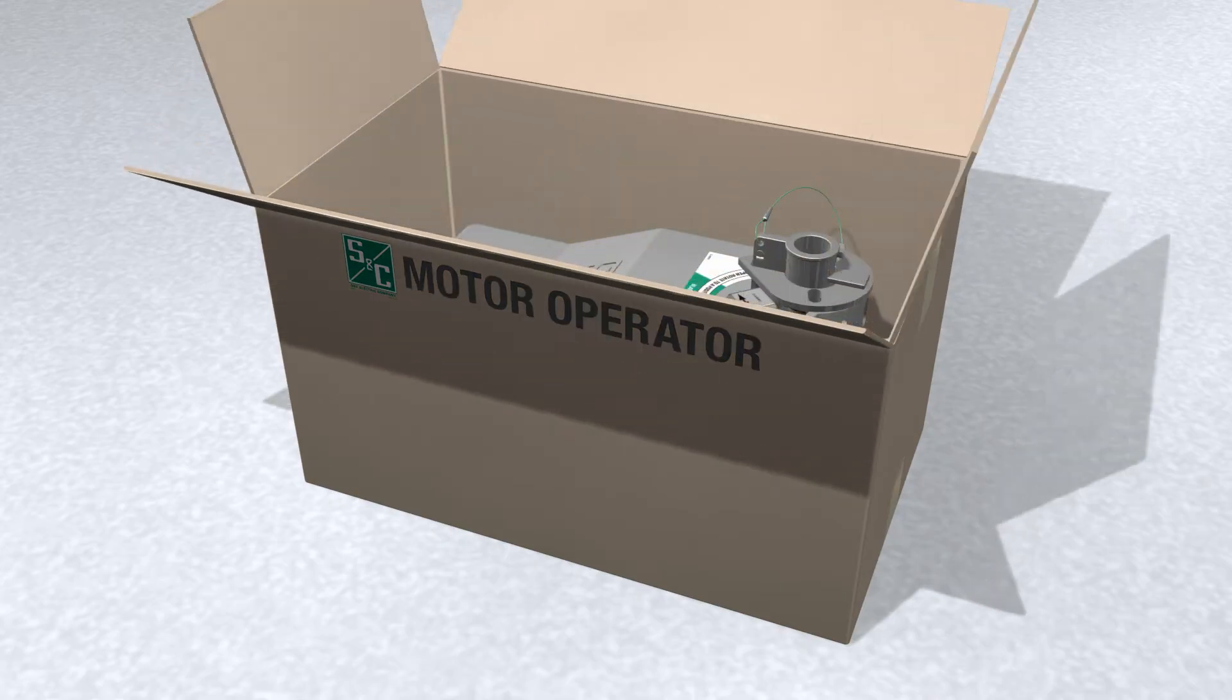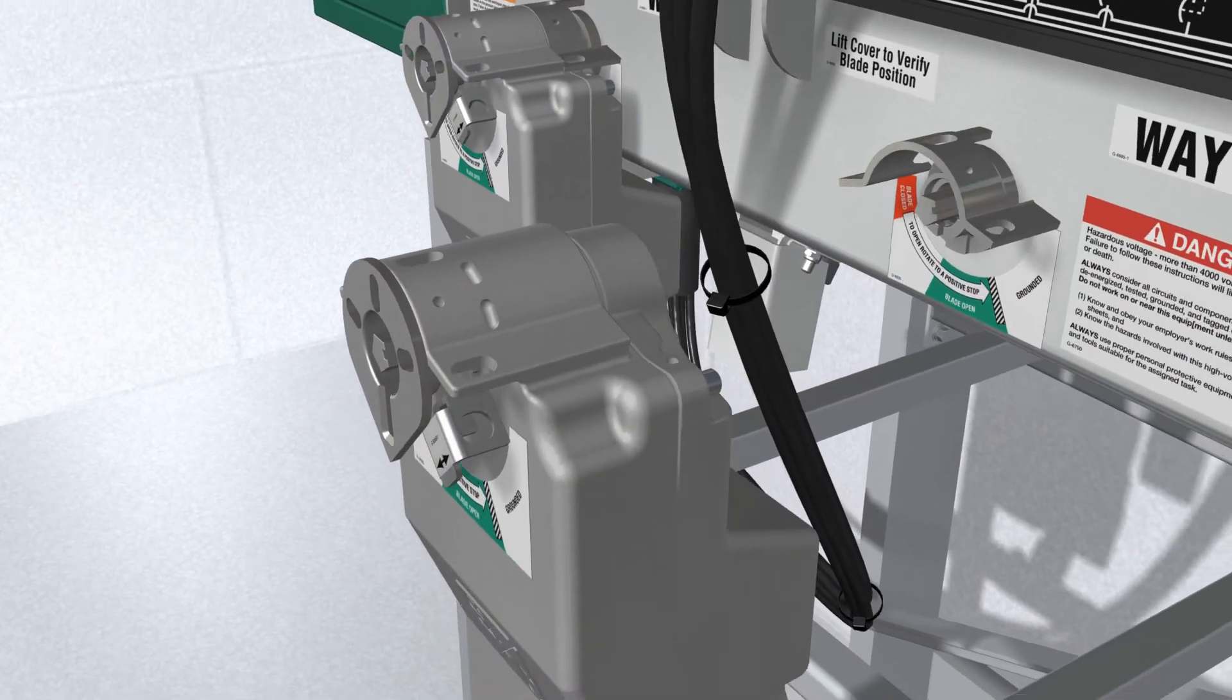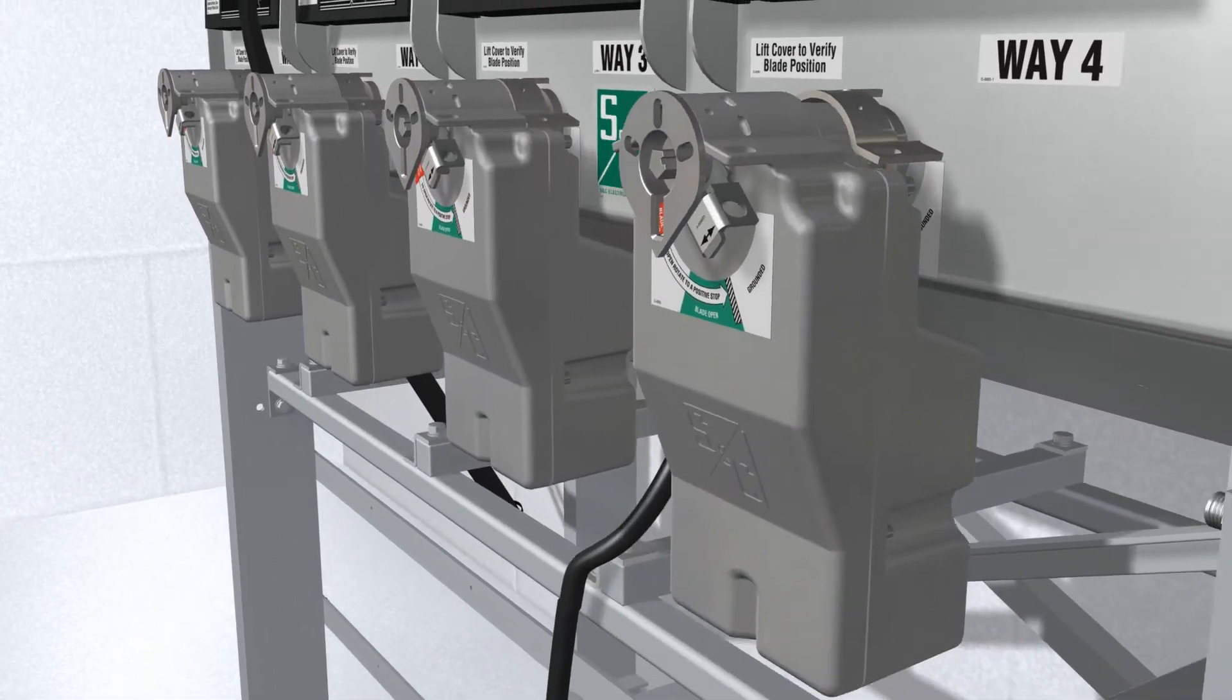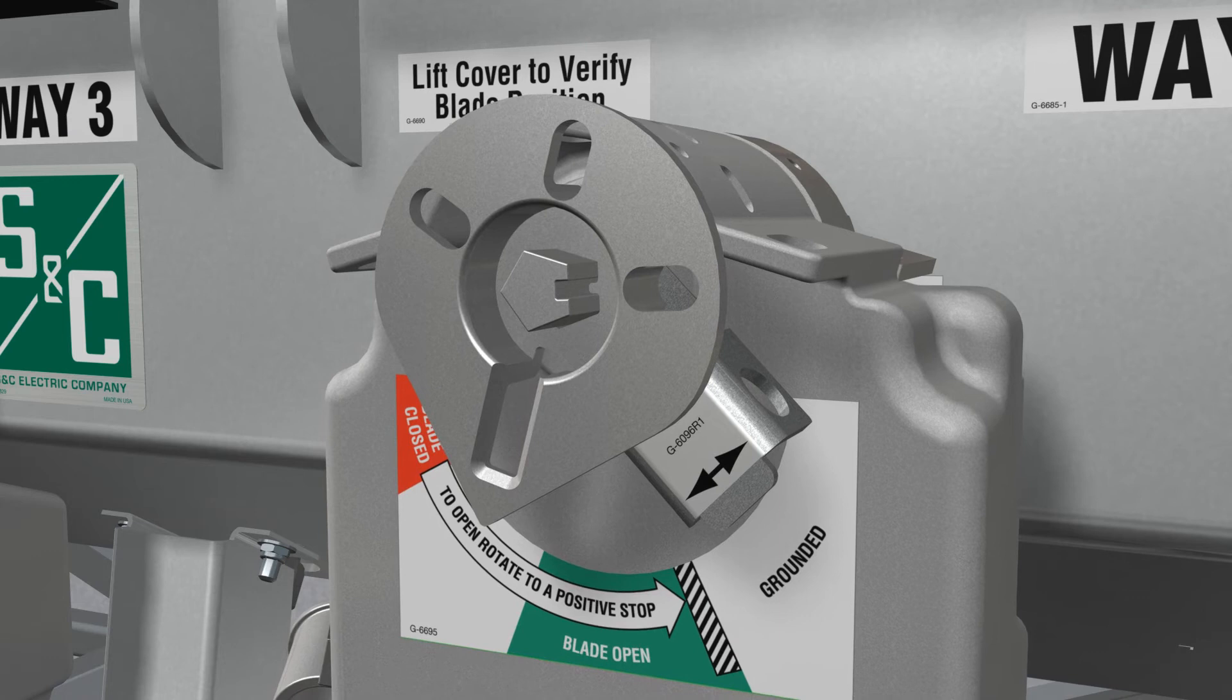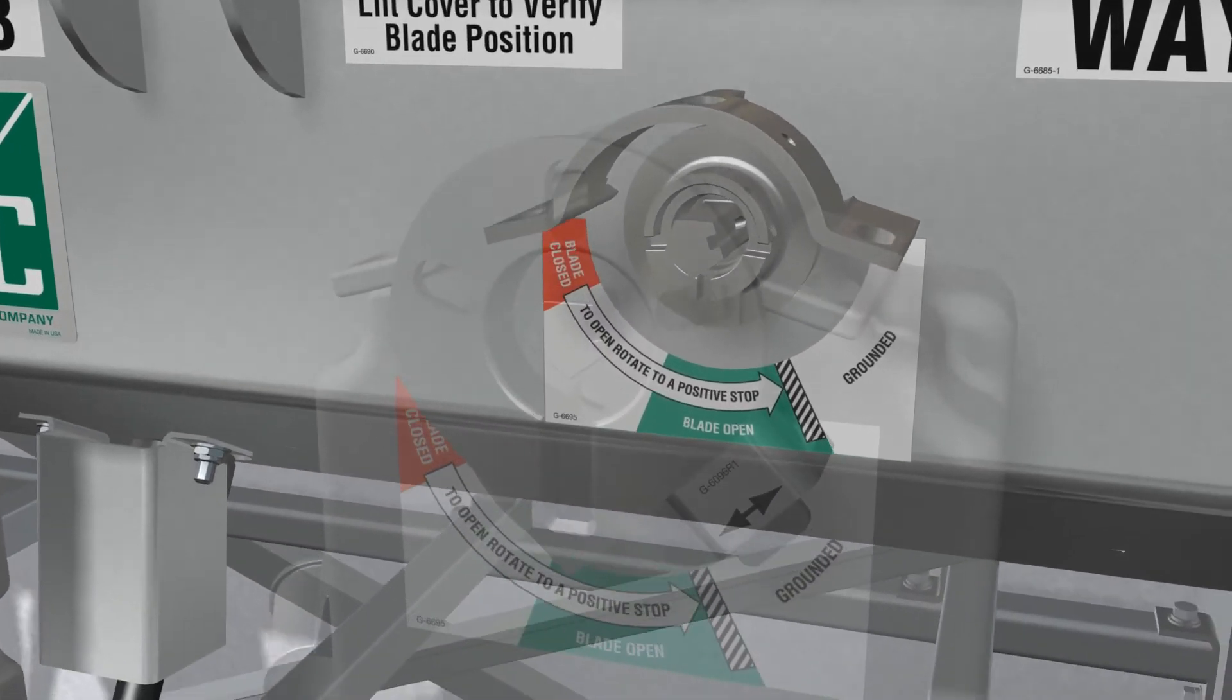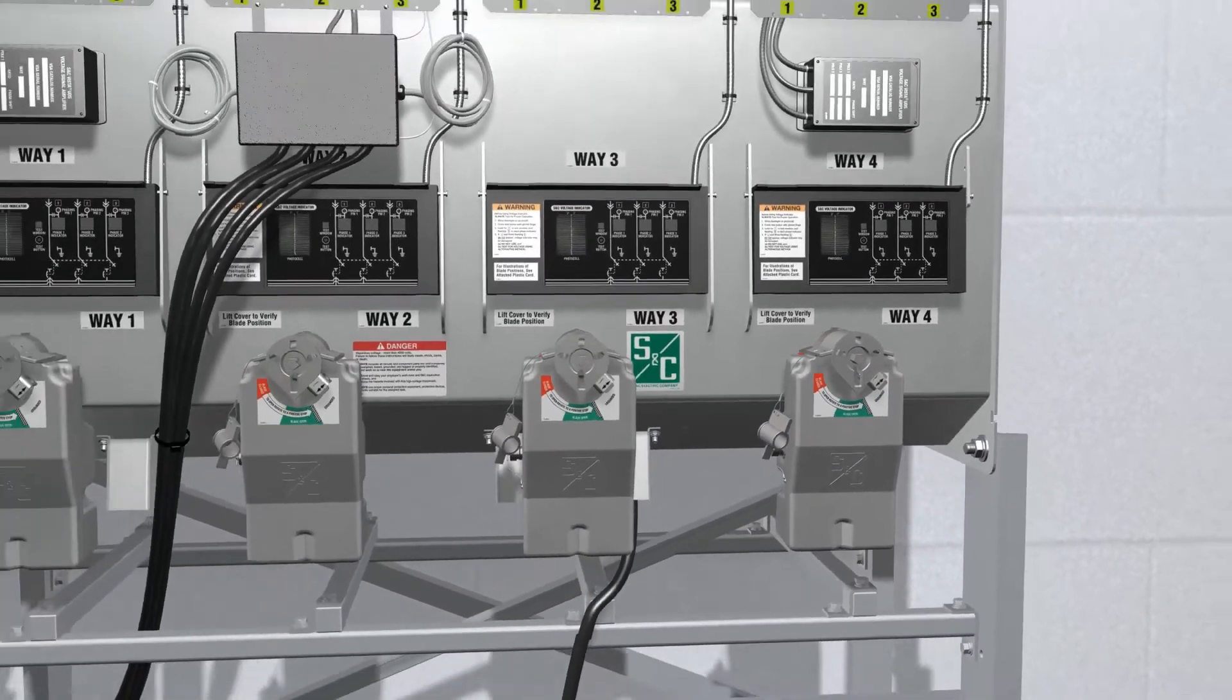To install motor operators, first place each motor operator over the operating shaft on the gear. It may be necessary to manually rotate the motor operator shaft by twisting the operating disc to line up the operator key with the shaft notch key.